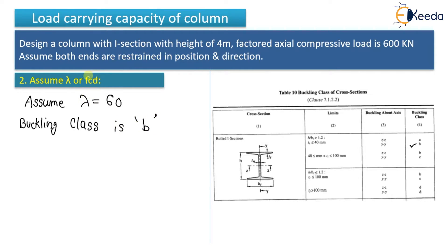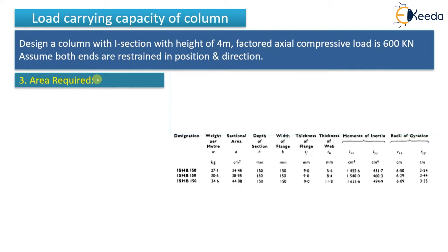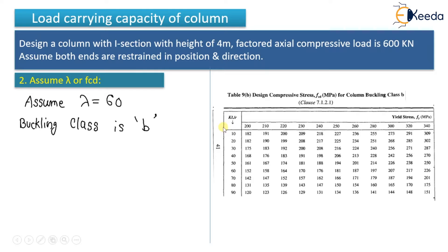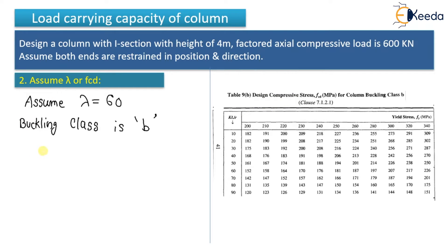Step three: find area required. Since buckling class is B, I use Table 9b (page 41, IS 800:2007) to find fcd (design compressive stress). With lambda = 60 and fy = 250 MPa, the value from Table 9b is fcd = 181 N/mm².